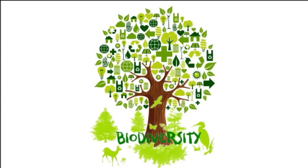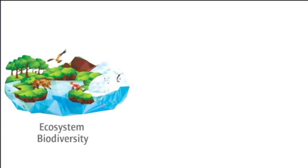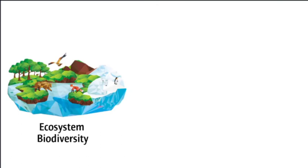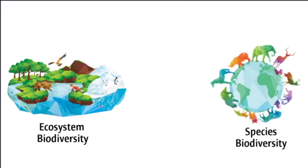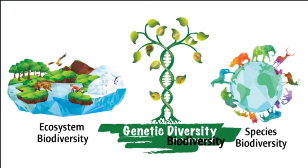In biodiversity, there are three components. The first one is ecosystem biodiversity, next is species biodiversity, and the last one is genetic biodiversity.